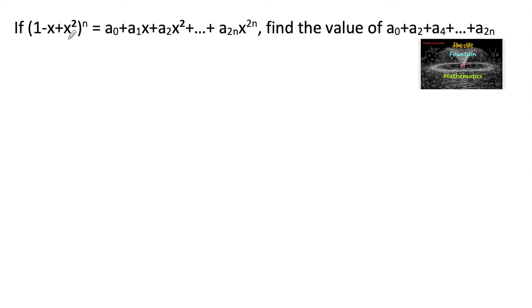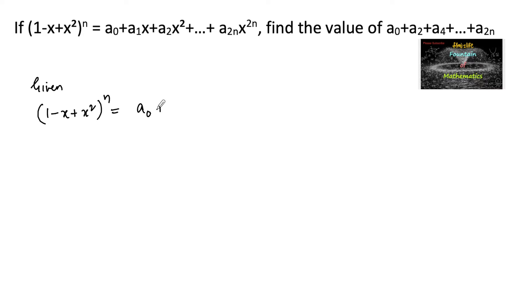Given (1 - x + x²)ⁿ = a₀ + a₁x + a₂x² + ... + a₂ₙx^(2n), find the value of a₀ + a₂ + a₄ + ... + a₂ₙ. So the expansion is given as Equation 1.